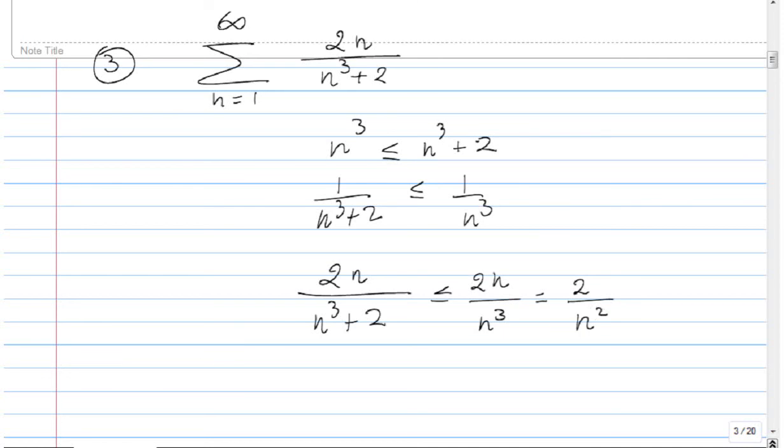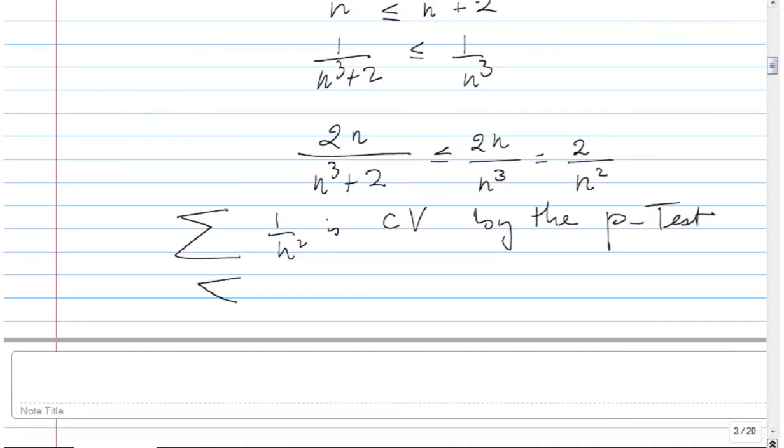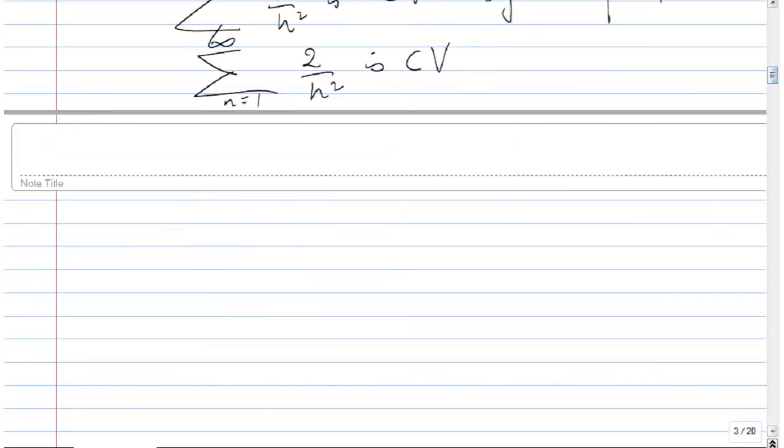So again the series one over n squared is convergent by the p test. So if I multiply by two I get a convergent series using algebra of convergent series. And if the big one is convergent, we conclude that the small one is convergent as well by the basic comparison test.